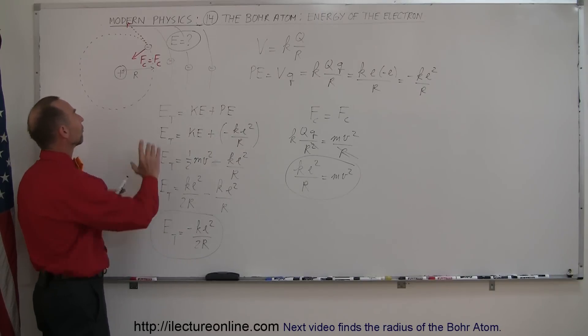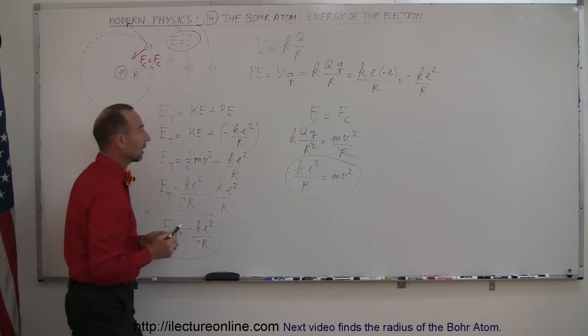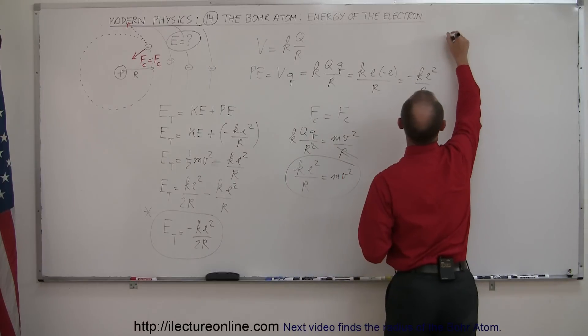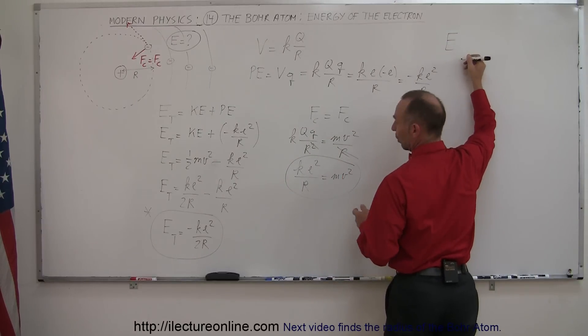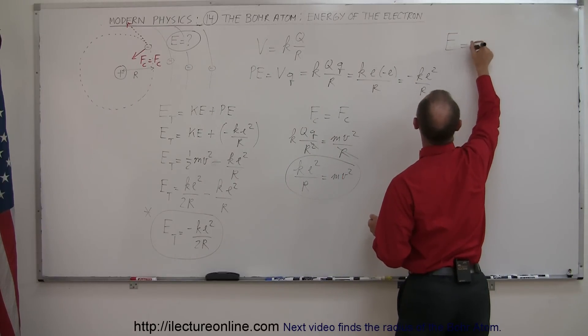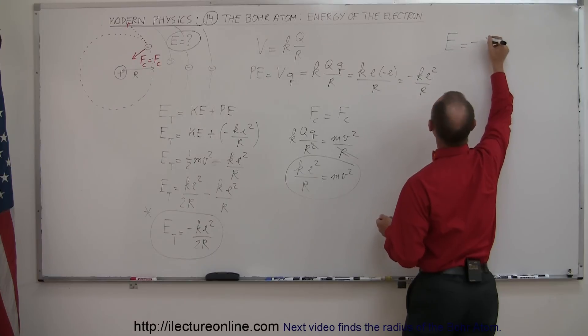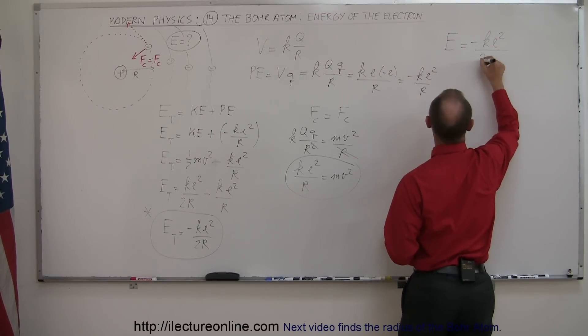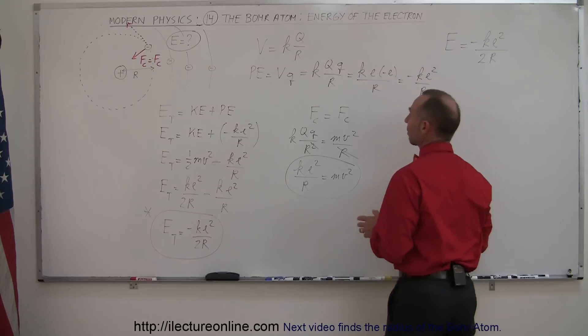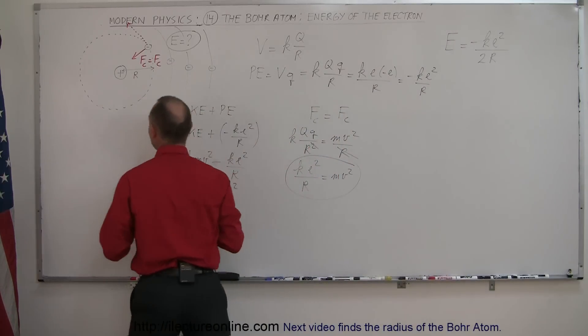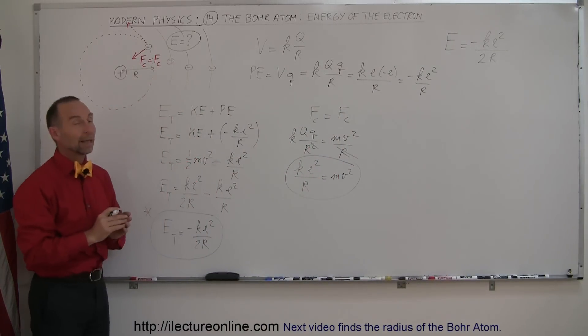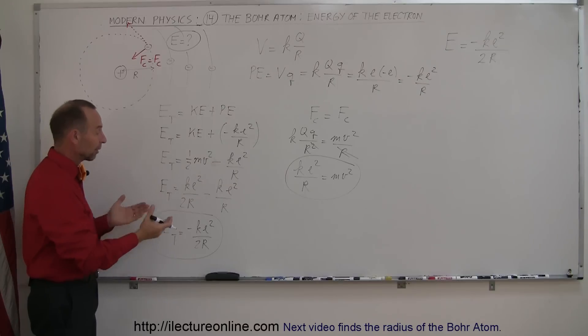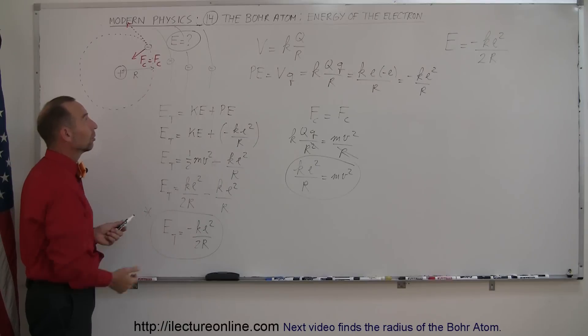At this point we now know how to calculate the energy of an electron in an orbit. The energy of an electron orbit is equal to minus Ke² divided by two times the radius. In the next video we're going to see how we can actually find the radius of that orbit, then calculate the actual energy. That's the first part, come back for part two.